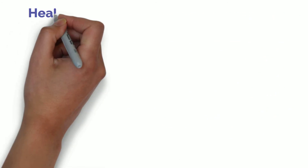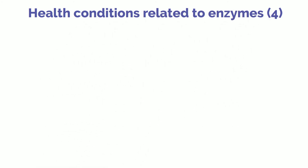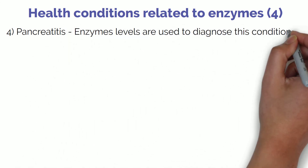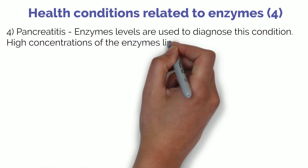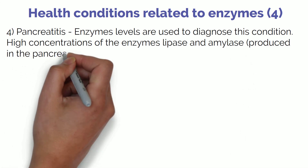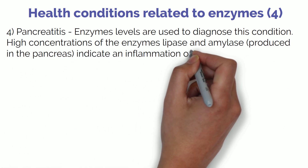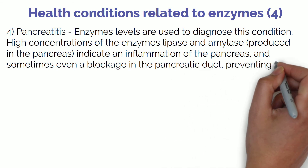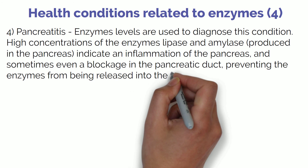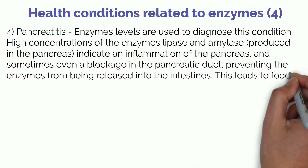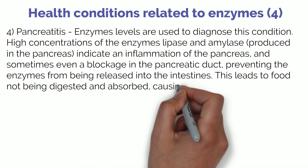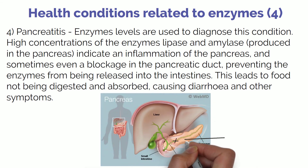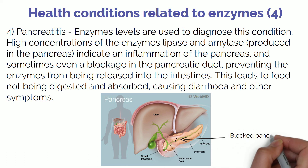There are instances where enzyme levels in the body can indicate the presence of disease. An example is pancreatitis — here enzymes are not the cause but the telltale sign. The enzyme lipase, produced in the pancreas to break down lipids, when found in high concentrations in the blood along with amylase (another pancreatic enzyme), indicates the pancreas is inflamed, leading to pancreatitis. In certain conditions, the duct connecting the pancreas to the intestines becomes blocked, preventing these enzymes from reaching the intestines and resulting in poor digestion, diarrhoea, and other symptoms.